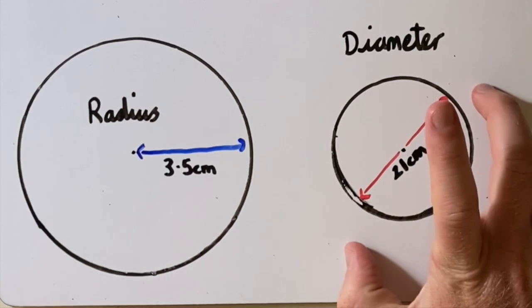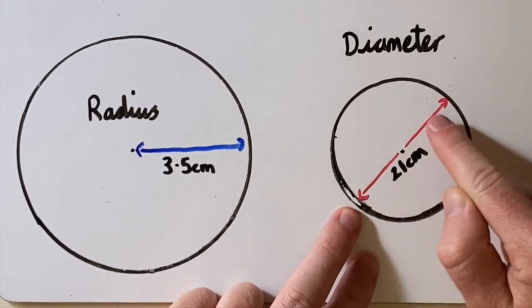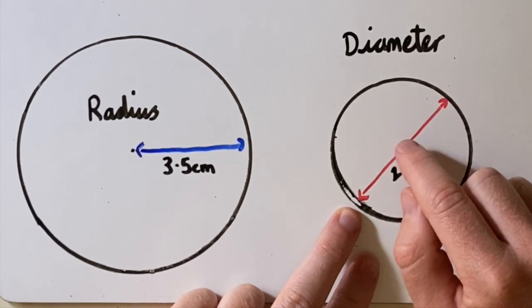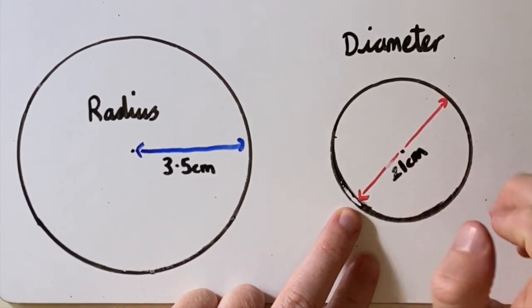In this second circle, the smaller one, I have a diameter of 21 cm. And what I would like to do is work out please the radius of this circle.